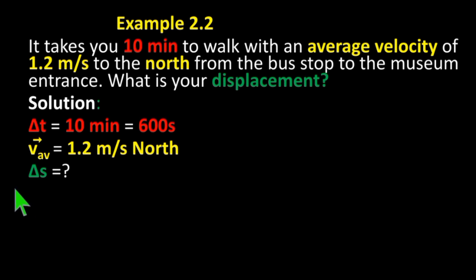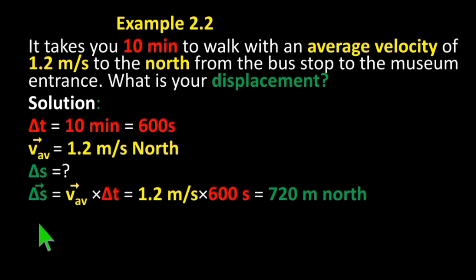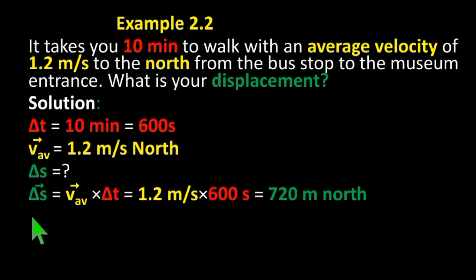Required: change in displacement. Change in displacement is equal to average velocity times change in time. Change in displacement equals average velocity multiplied by change in time.